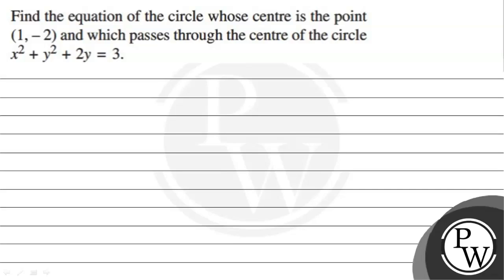Hello, let's read the given question. The question states: find the equation of the circle whose center is the point (1, -2) and which passes through the center of the circle x squared plus y squared plus 2y is equal to 3. The key concept to solve this question is knowing the different forms of the equation of a circle.